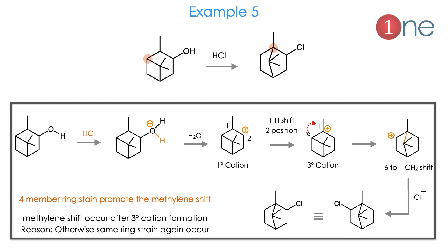The fifth example is a camphane-type system with an allylic group, where a methylated bicyclic system converts into a chloride product. HCl attacks, water eliminates, and a cation forms. A hydride shift occurs first to form a stable tertiary cation, then to release ring strain the methyl group shifts and forms another cation, and finally chlorine attacks to give the final product. You should decide whether the hydrogen shift occurs first or second. This is the best mechanism to release the ring strain; the other pathway retains the ring strain.